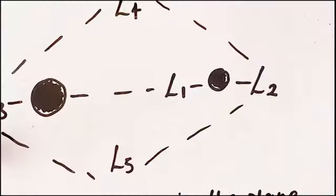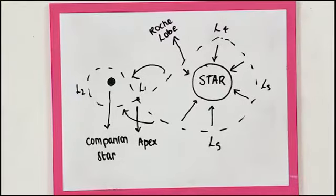The L1-Lagrangian point is on the plane and between these two bodies. This forms a two-lobed figure of eight with one of the two bodies at the center of each lobe. This critical equi-potential defines the Roche Lobe.